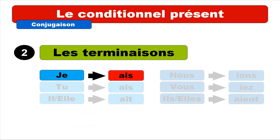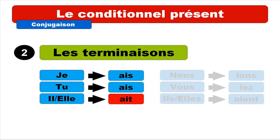Now we need to focus on the second part, and we're talking about les terminaisons — the endings. For je, the ending will be -AIS, and we pronounce it like È. For tu, it's the same form, so it's -AIS. For il and elle, even if we've got T instead of S, we pronounce it the same way — so it's -AIT.